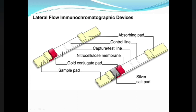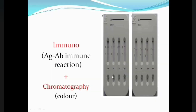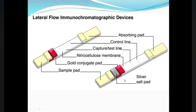The first and foremost part is the sample pad, upon which the liquid sample is dropped. It is called the sample pad because the sample is dropped onto it, and in the outer cassette covering it is present in the form of a window. Adjacent to the sample pad is the conjugate pad, in which we place the detector conjugate. The first step is putting the sample and the second step is putting the detector conjugate.